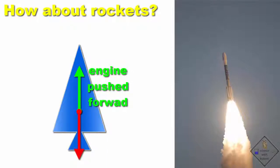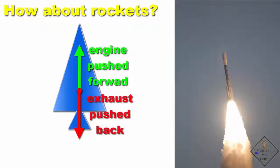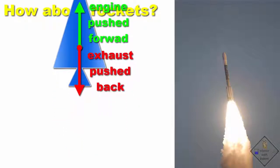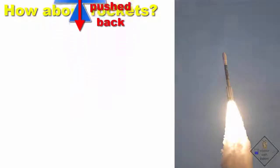And object B is the rocket engine pushing back, so it gets propelled forward, while the hot gases get propelled backward out the exhaust.